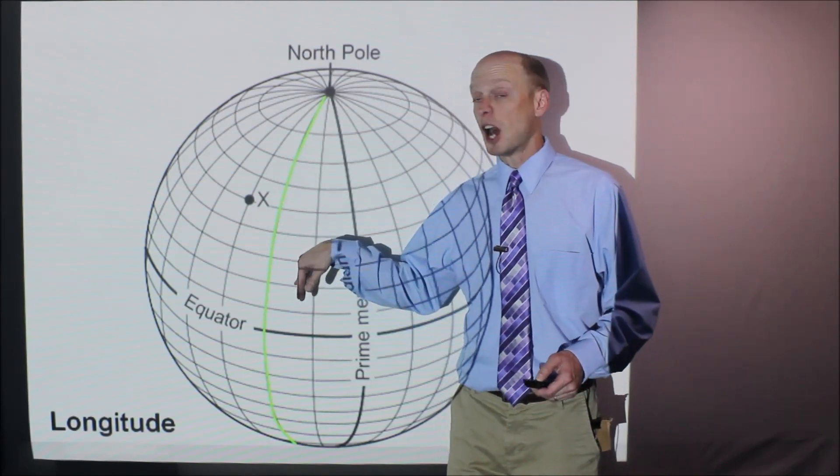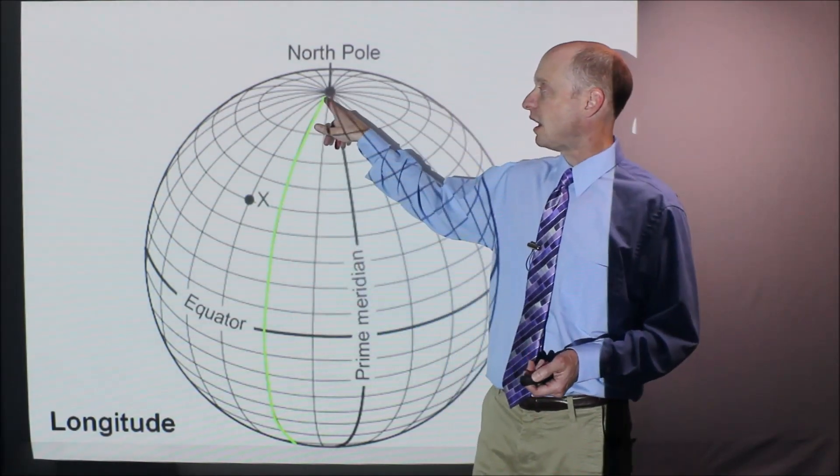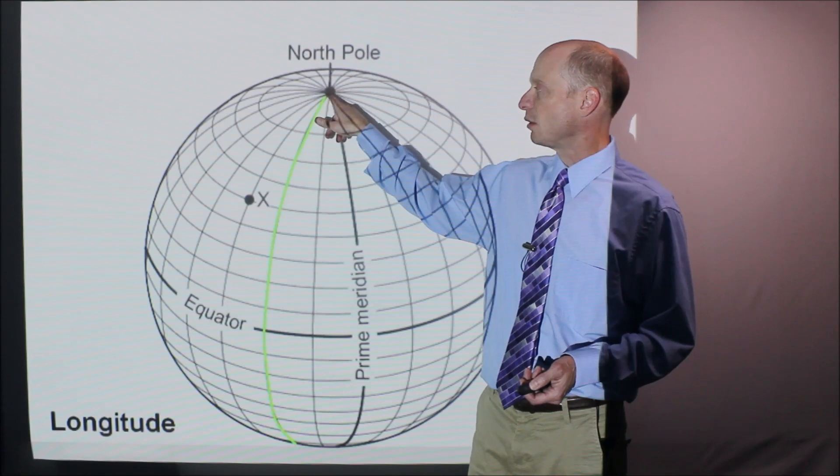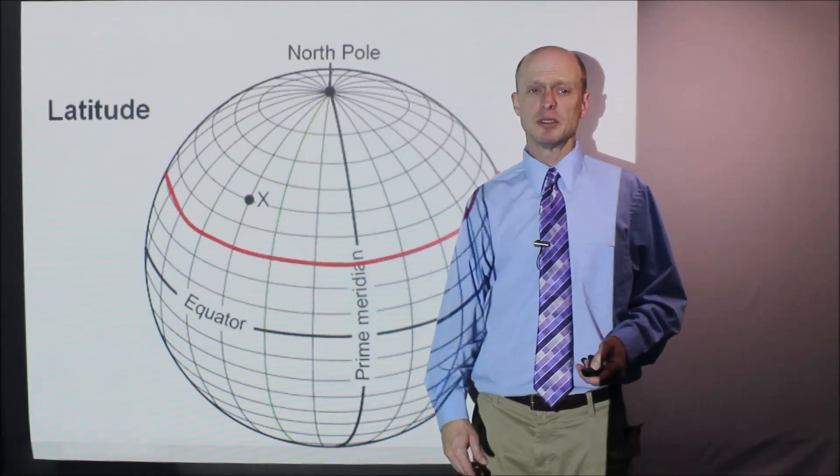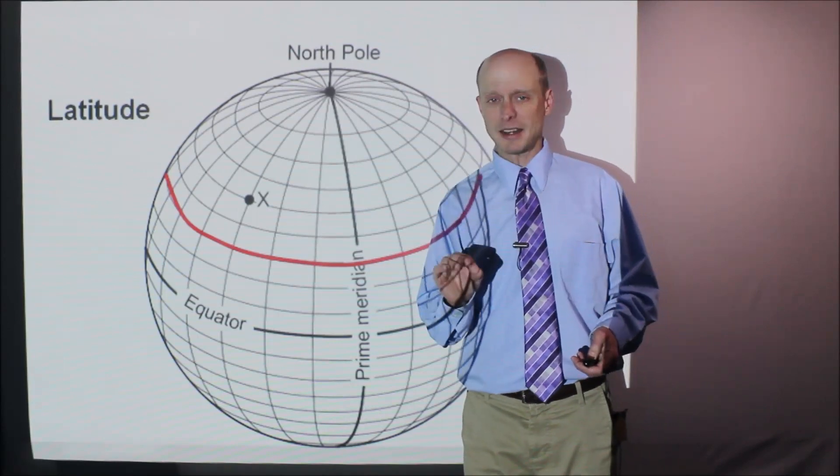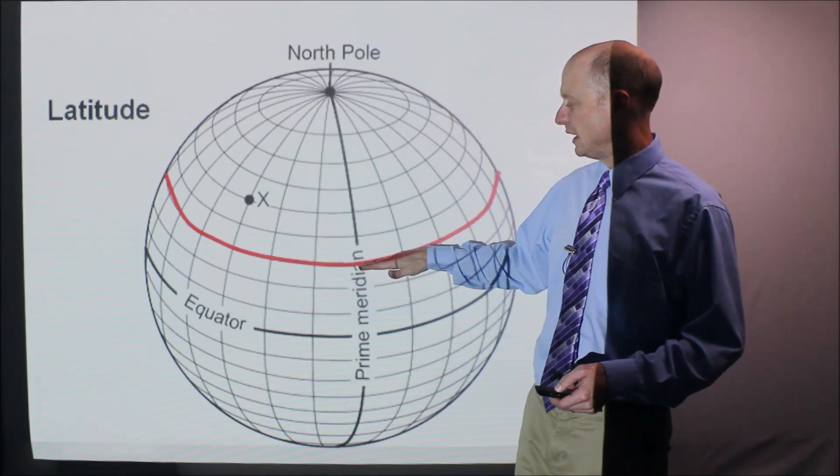This green line I have shown here is a line of longitude. You could say it kind of goes up and down when you're looking at the globe like this. All the longitude lines will sort of all go through the North Pole. They all go through the South Pole as well.